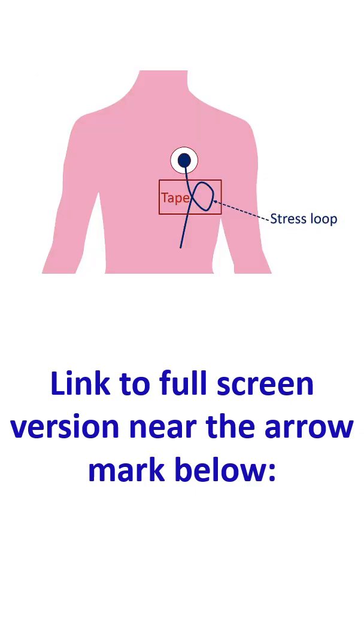The number of electrode patches applied over the chest will depend on whether it is a 2 channel or 3 channel Holter recorder. Color coding of the electrodes may also vary from manufacturer to manufacturer. Positions for attachment may also be changed by your healthcare provider. Electrode patches are connected to the Holter recorder using the leads provided.